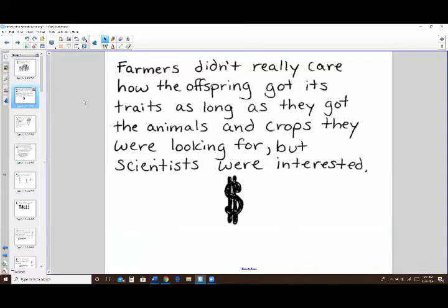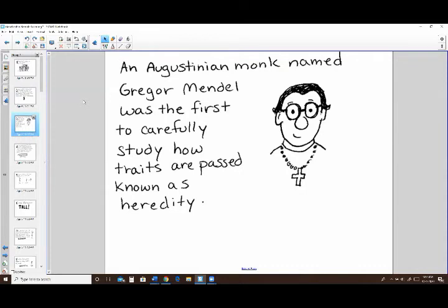So that was great for a farmer. They were just trying to find the best crops and produce and stuff. But scientists were like, hmm, I wonder what's going on. So if you bring these two animals together, why do you get the offspring that you do? So scientists started to look at that. It wasn't until Gregor Mendel that we really carefully studied how traits are passed on. So Gregor Mendel is known as the father of genetics.